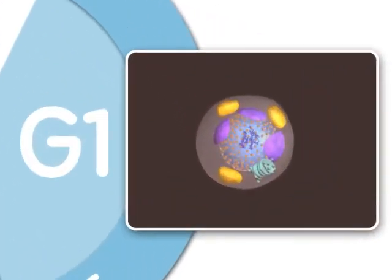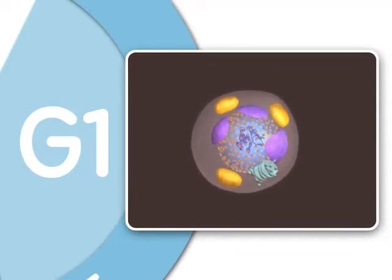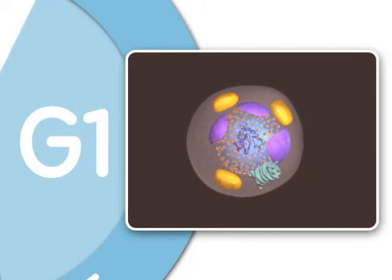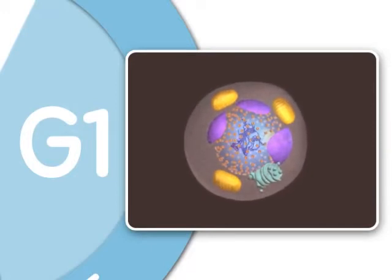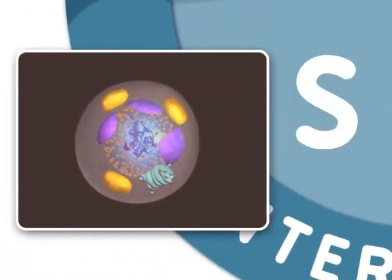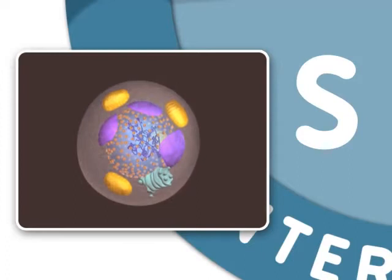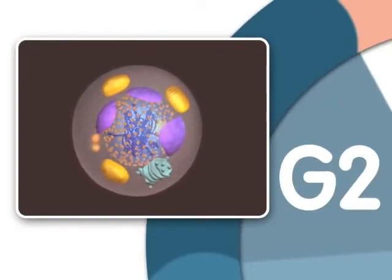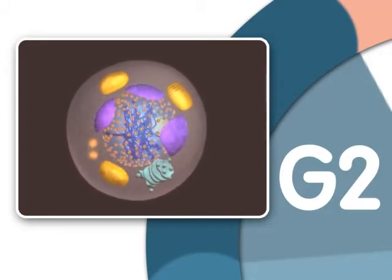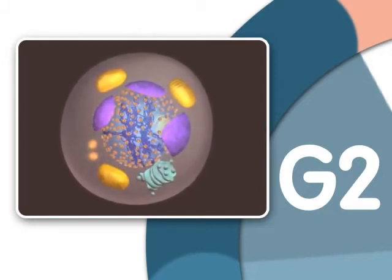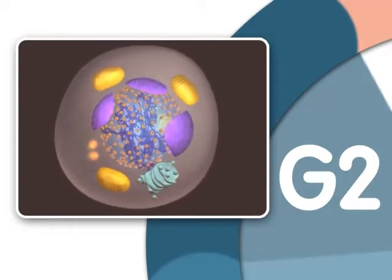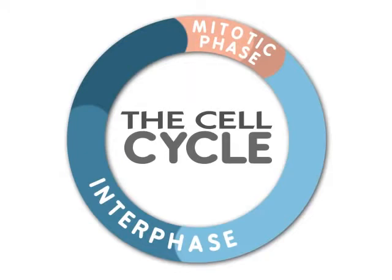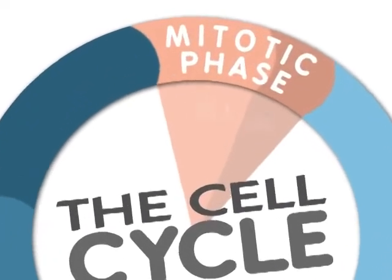G1, or Gap1, is the first growth stage of interphase. In G1, the cell grows to nearly its full size and performs many of its specific biochemical functions that aid the organism. Next is the S, or synthesis, phase — an important stage because it is during the S phase that DNA in the nucleus is replicated. The cell next enters another growth stage called G2, or Gap2, where the cell finishes growing. Once the cell has duplicated DNA in the nucleus and two centrosomes have appeared in the cytoplasm, mitosis can begin. For a typical eukaryotic cell, this will last about 80 minutes.